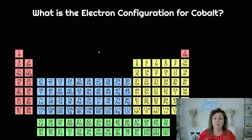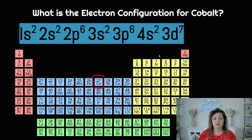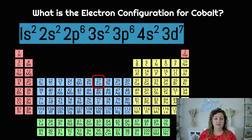We're gonna find cobalt — cobalt is right here. It is in the D block. And we're gonna start at the beginning of the periodic table and write down what we need to. So we start at the beginning, just like we're reading a book: 1s2 — write it down, that's our endpoint. Come down to the second row: 2s2 — that's our endpoint, write it down. We're skipping ahead: 2p6 — write it down. 3s2 — write that down.